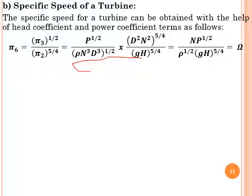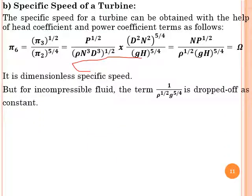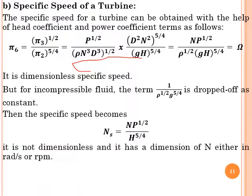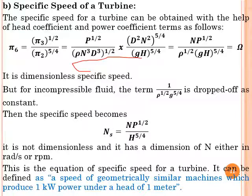This is the dimensionless specific speed for a turbine. Since density ρ and g are constants, they are dropped, and the specific speed expression becomes Ns = N√P / H^(5/4). The specific speed of a turbine is defined as the speed of geometrically similar machines which produce 1 kW of power under a head of 1 meter.